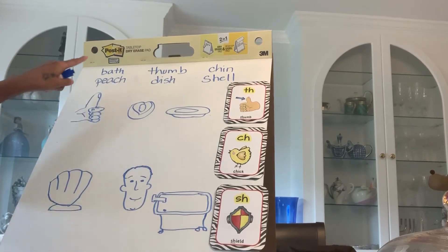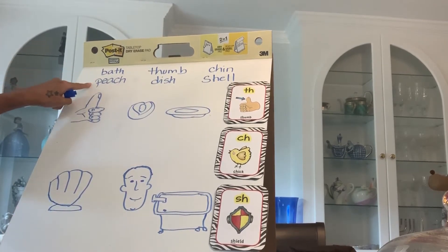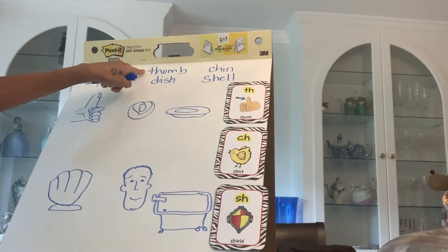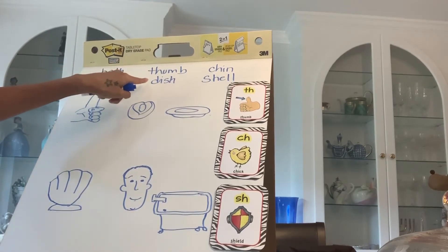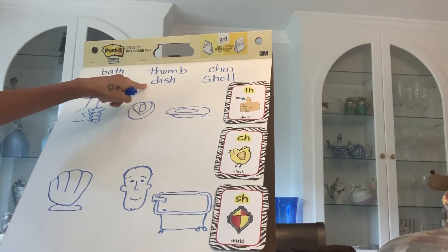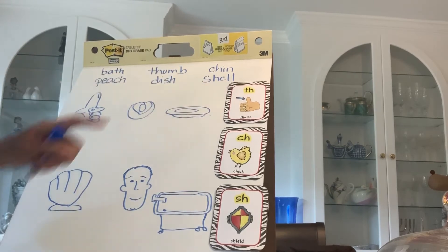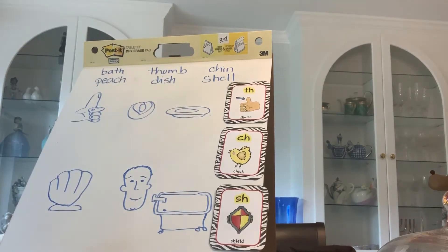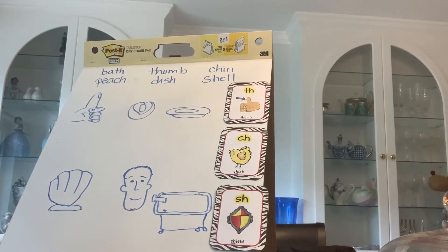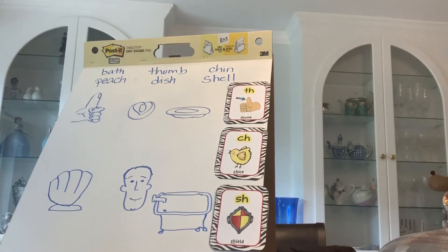Our words are bath, peach, thumb, dish, chin, and shell. Today our objective is to practice spelling words with consonant digraphs CH, SH, and TH.